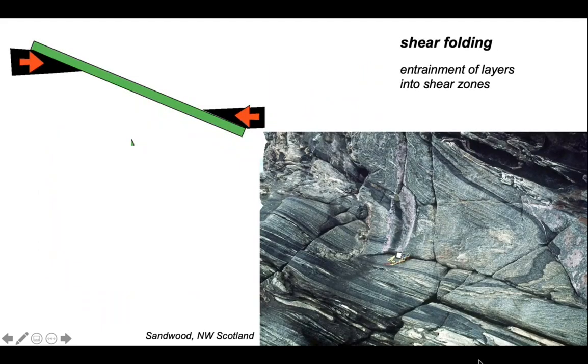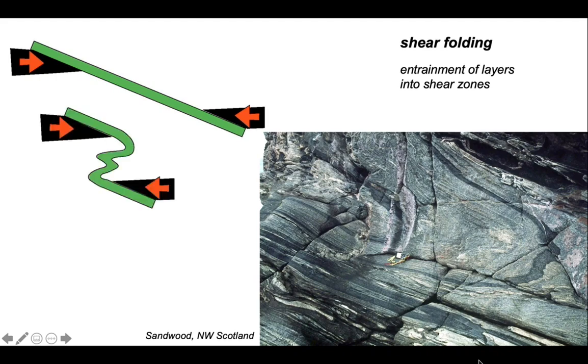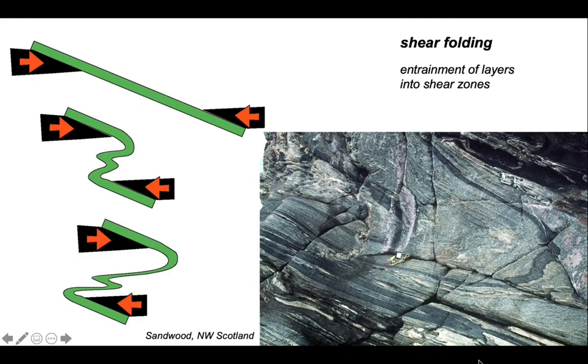Another way in which layers can become folded is by becoming entrained into zones of shearing. Let's see how that works. So here we have a layer and these two blocks are going to move past each other like this, creating a shear zone into which our green layer has become entrained. And as a consequence, it is folded.